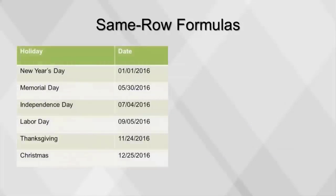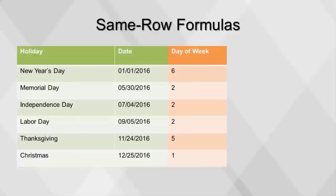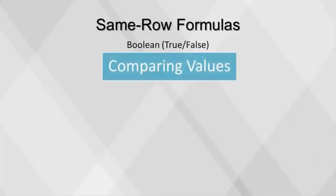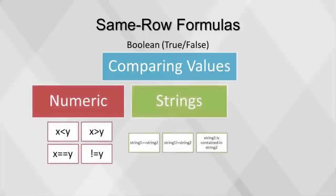This table contains the major holidays for 2016. For each date value we can extract other features — we can add a column with a numeric value to describe the day of the week, and subtract today's date from the date column to find the number of days remaining until the holiday occurs. With formulas, we can also compare values of two different fields to create a boolean variable. A boolean variable is typically used to capture true-false values, and a logical statement or condition can be used to compare two values of the same type: numeric values, strings, and dates.